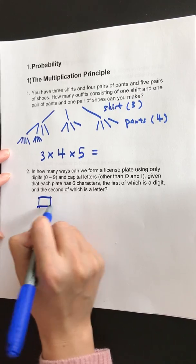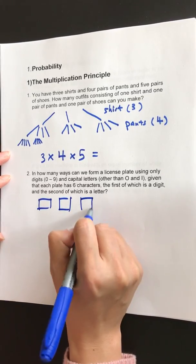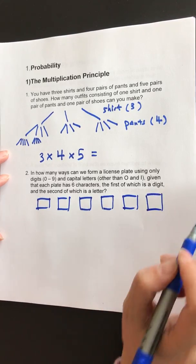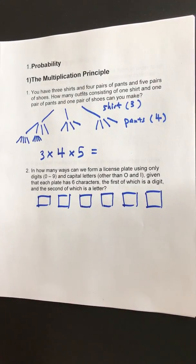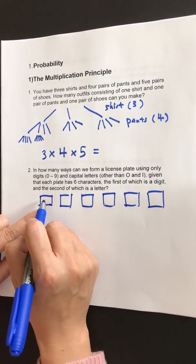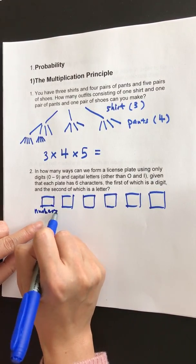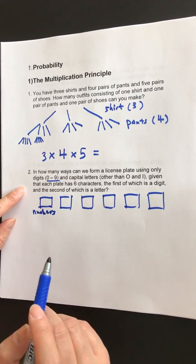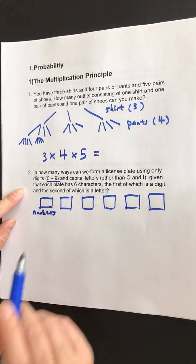Okay, we have one, two, three, four, five, six. So the first one has to be numbers. Okay, so we have zero to nine as options. Zero to nine, how many numbers are there? There are ten.